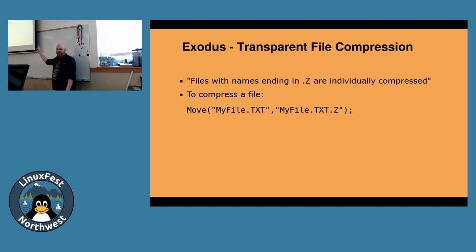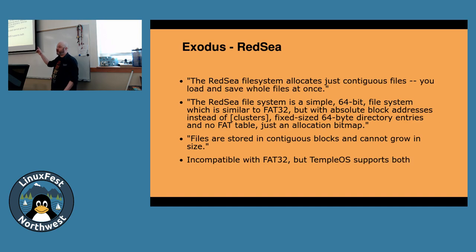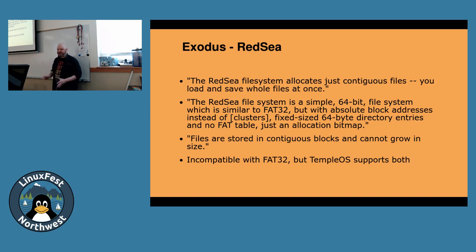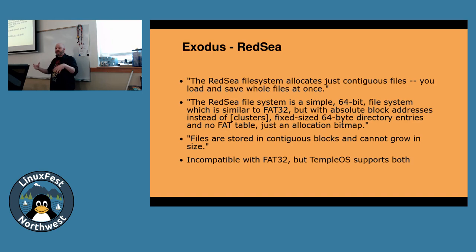Transparent file compression: all you do is rename the file to end in dot capital Z. Uncompressing it is renaming it so it doesn't end in dot Z — that's it. The Red Sea file system is a simple 64-bit file system which is similar to FAT32, but it doesn't use a file allocation table. If you want a one megabyte file, you get one megabyte of data and you write your data there. If you open that file and add more data to it, you get a different, larger set of data, and your new file gets written there while the old one gets dereferenced.